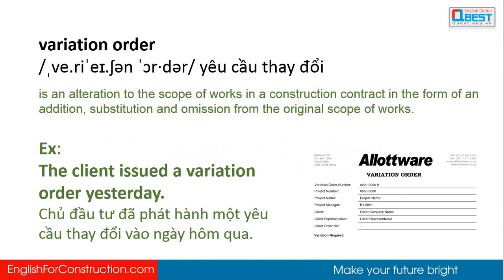Variation order: an alteration to the scope of works in a construction contract, in the form of an addition, substitution, and omission from the original scope of works. The client issued the variation order yesterday.